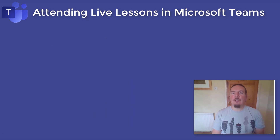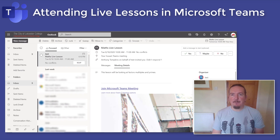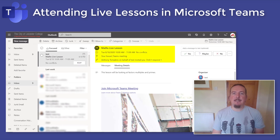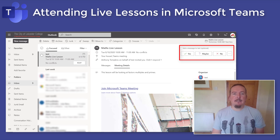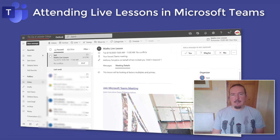So first up, how do you know you have a live lesson that you need to attend? Well first you should receive an email sent to your school email account with the date and time of the meeting. In that email there should be buttons for you to press to indicate to the teacher whether you will be attending or not. It's good practice to reply but not essential. If you do accept, your teacher will be able to see that you have received the invite and you have indicated that you are going to be attending.